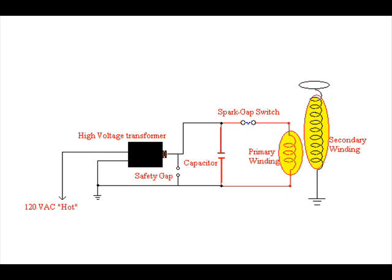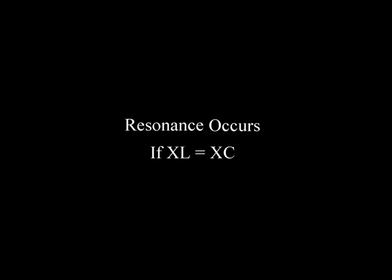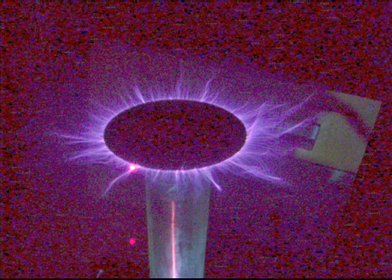And unlike a normal transformer, it really has nothing to do with the turns ratio of the windings. Both the primary circuit and the secondary circuit have a certain amount of inductive reactance and capacitive reactance. In the secondary circuit, the capacitance comes from the top terminal. In both circuits, energy bounces back and forth between the charge in the capacitor and the magnetic field around the winding. If inductive reactance and capacitive reactance are equal, the circuit is in resonance. Normally the two would just cancel each other out, but with a Tesla coil they build on each other, and the energy is actually amplified to incredibly high voltages at very high frequency.